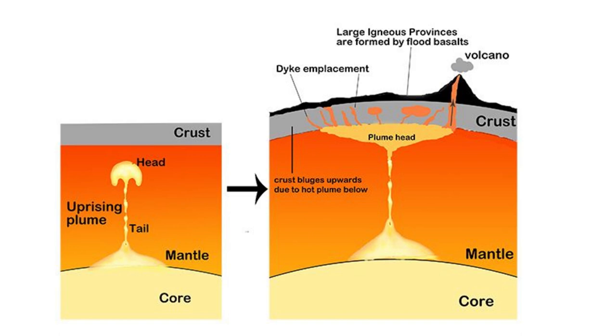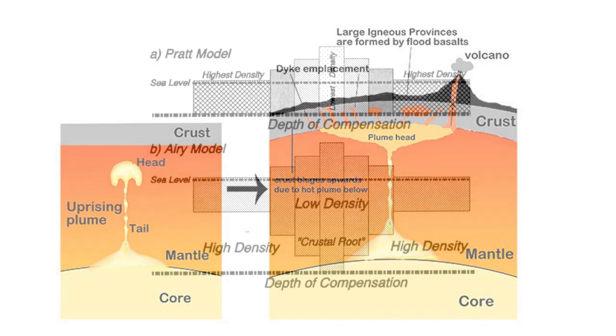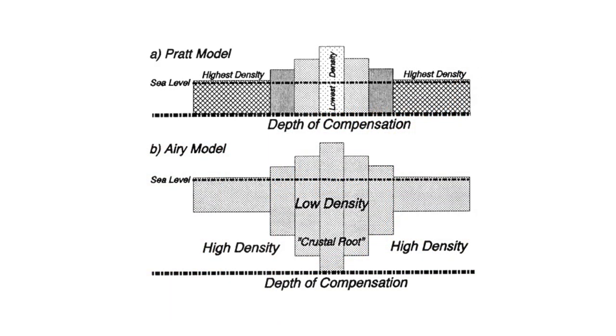Increased activity in the mantle plume has two effects. Firstly, there will be some additional uplift due to the relative increase in pressure. Secondly, the crust thickens. As we know that the crust is less dense than the material below, there will be a corresponding uplift on the surface of the plateau.